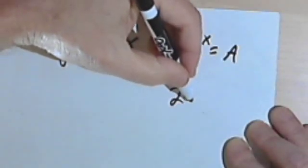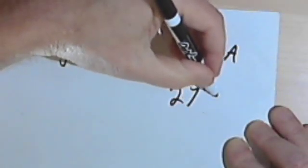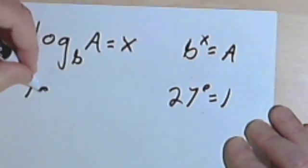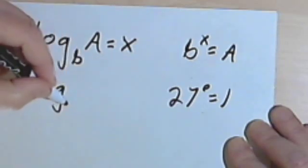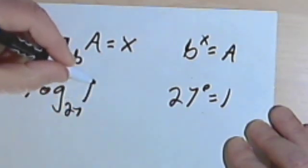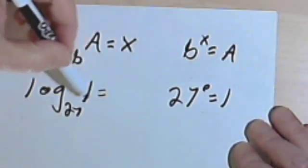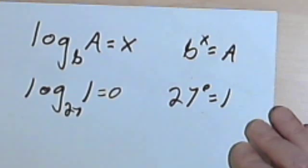Let's do, we kind of did this already, 27 to the 0 power equals 1. So that means that the logarithm base 27 of 1, any time you have a logarithm of 1, no matter what the base is, it's going to equal 0.